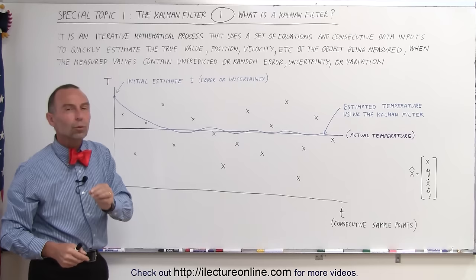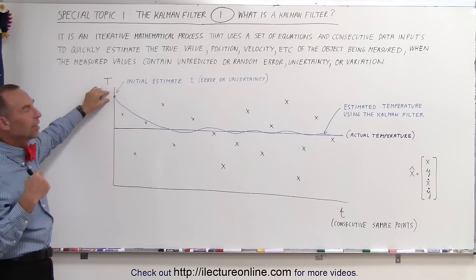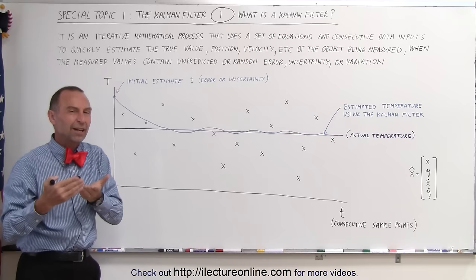The Kalman filter can do it a lot faster. It starts out by taking an initial estimate. It almost doesn't matter what that initial estimate is, and of course in your estimate you have to predict a certain amount of error or uncertainty.